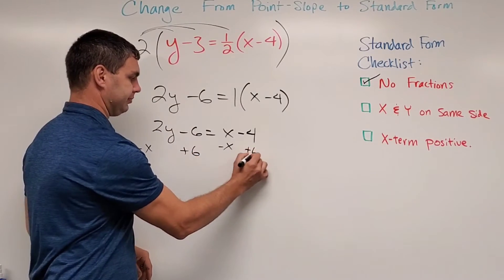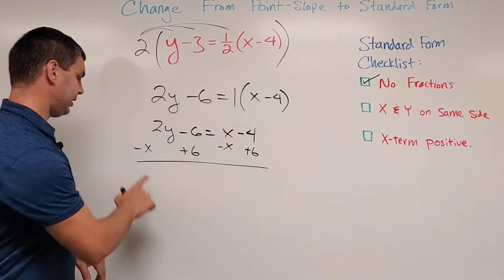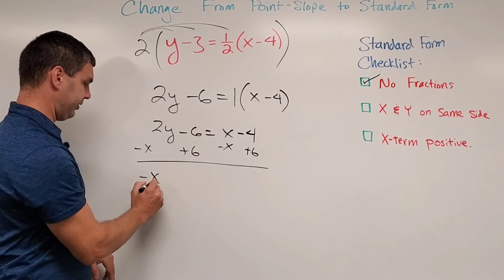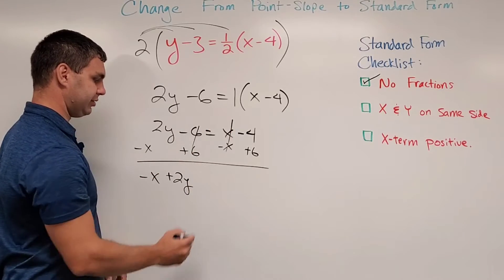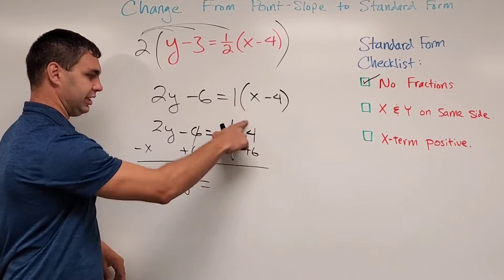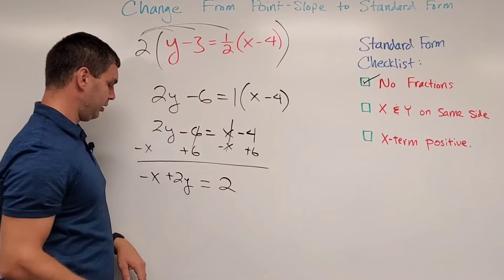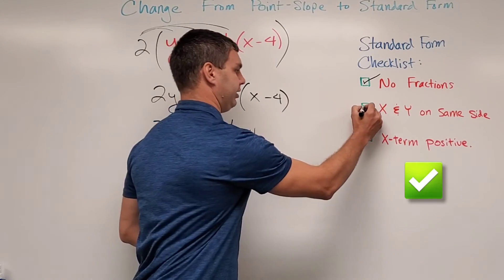When I do that, I like to write my x term first, so it's going to be negative x positive 2y or plus 2y. The 6 is canceled, the x is canceled, so I can now say equals negative 4 plus 6 is 2. And now x and y are the only things on the left side of the equal sign.